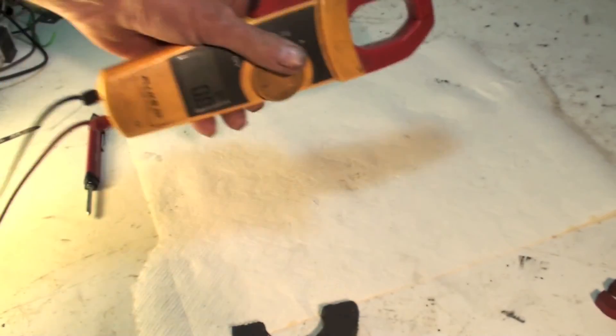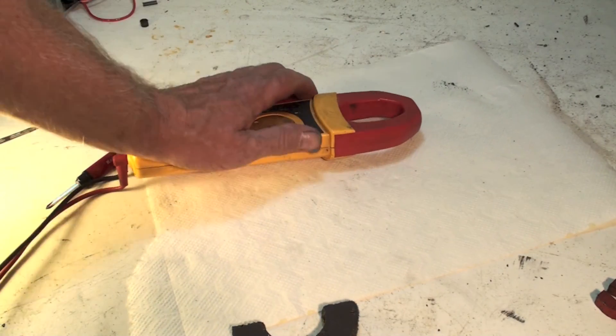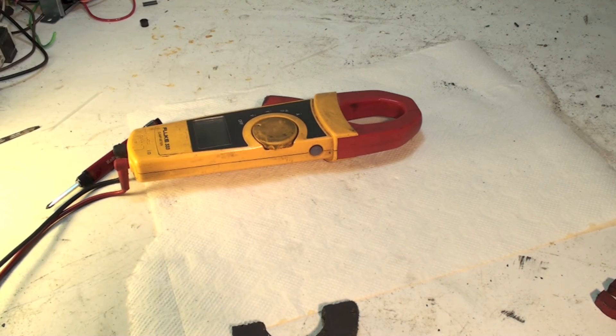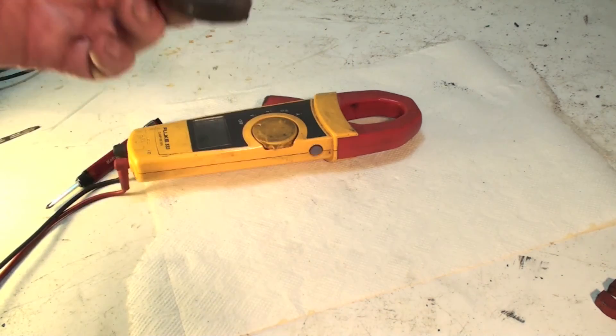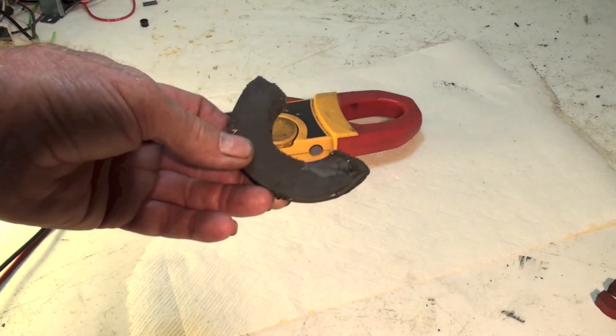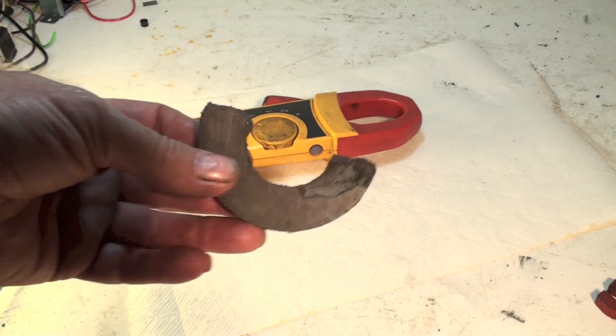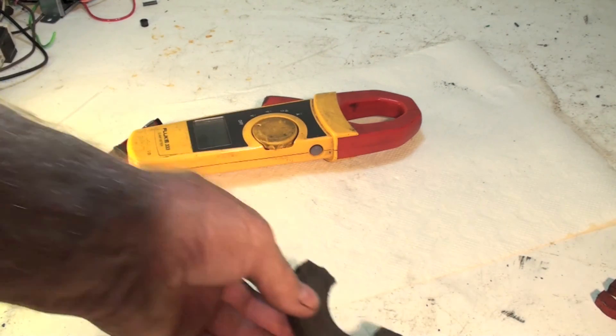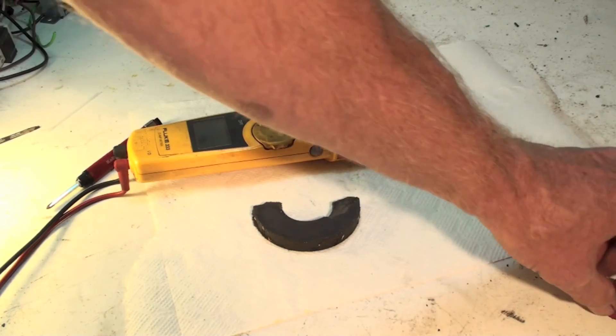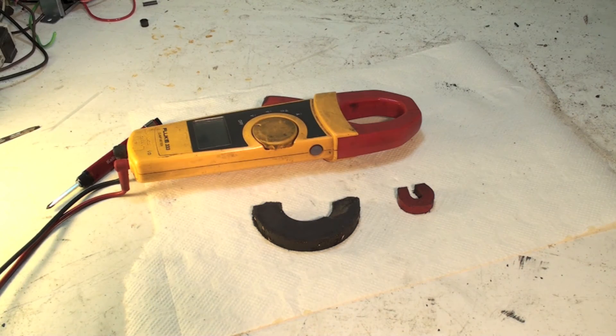So when I do that, this magnet is moving. Of course, permanent magnet. I can do this with an electromagnet just as well as I can do it with a permanent magnet. It's just easier to demonstrate with a permanent magnet. But that is inducing power.